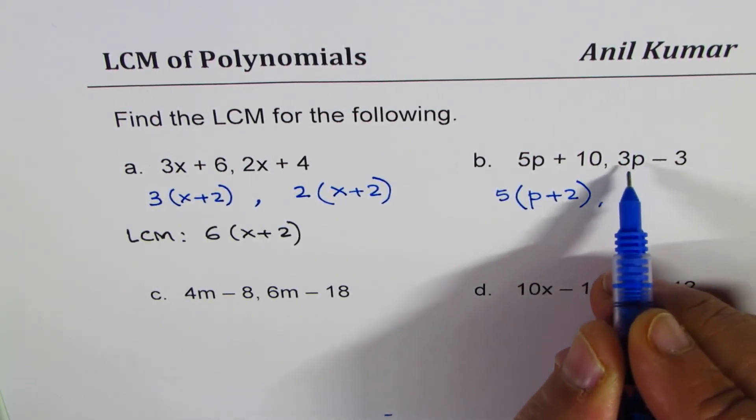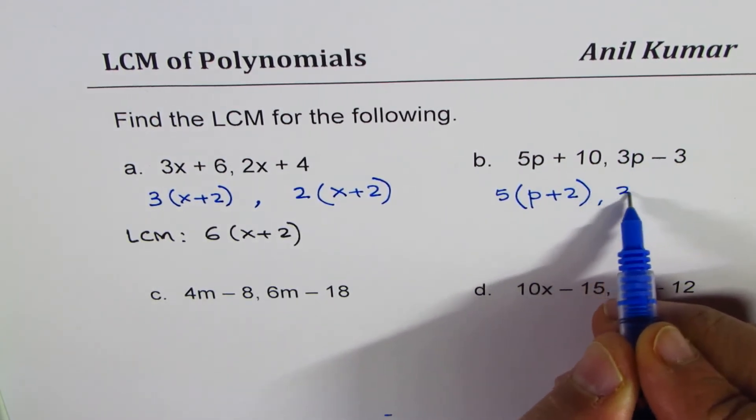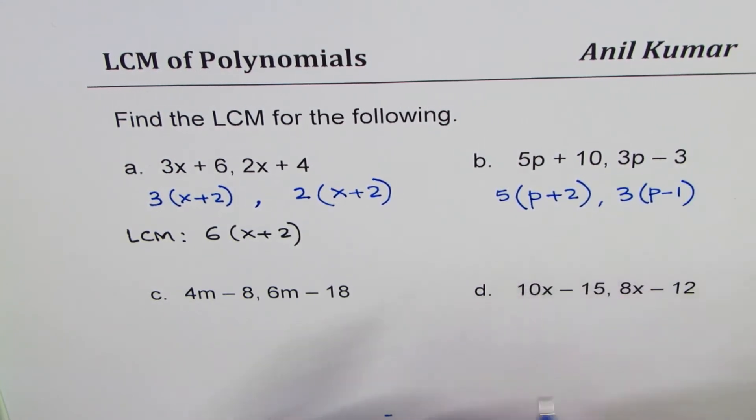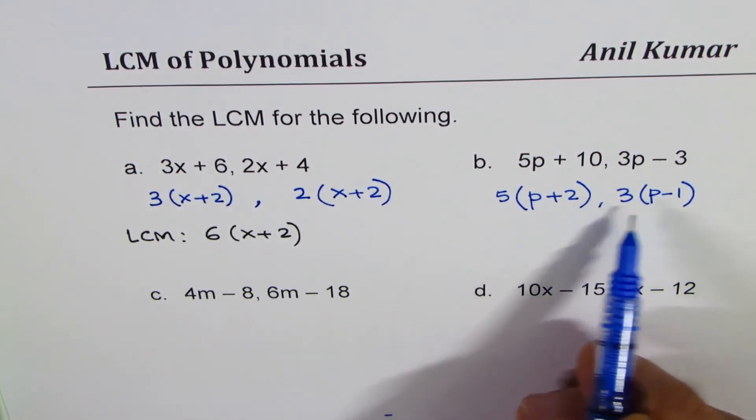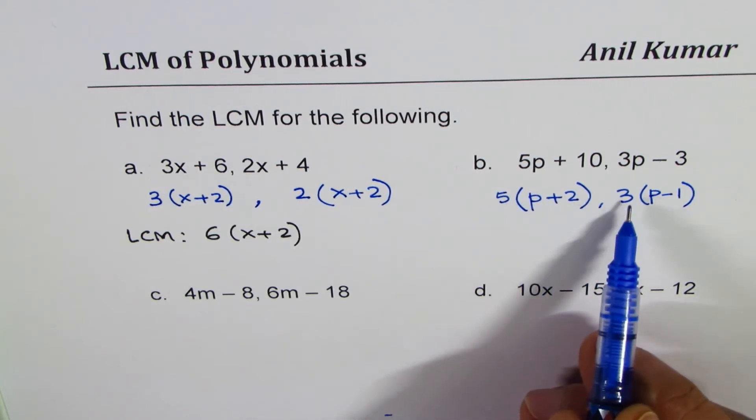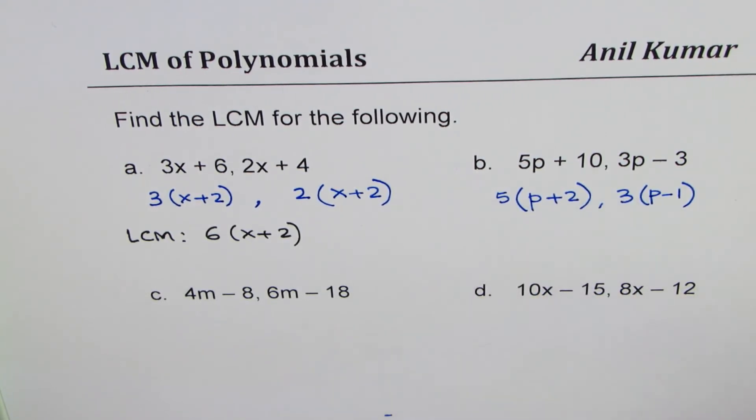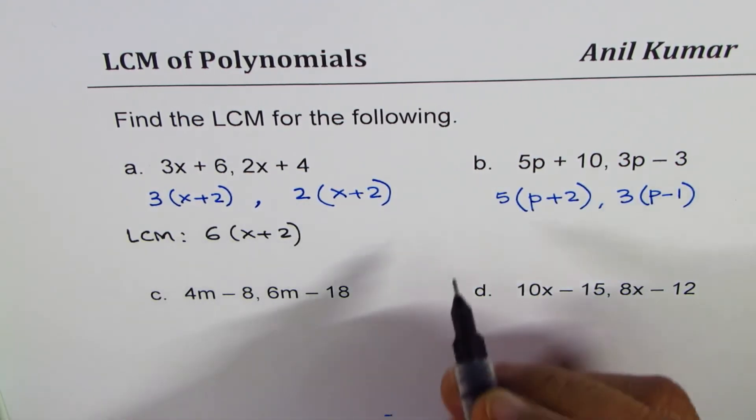In this case, 3p minus 3, we can take 3 common, we get p minus 1. Now in this particular example, as far as the numbers are concerned, 15 is the LCM. So let's write down the LCM here.